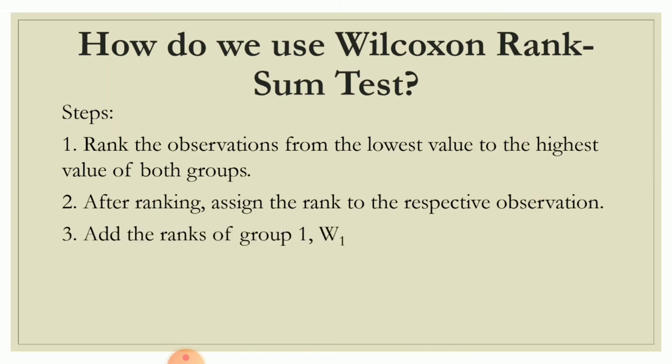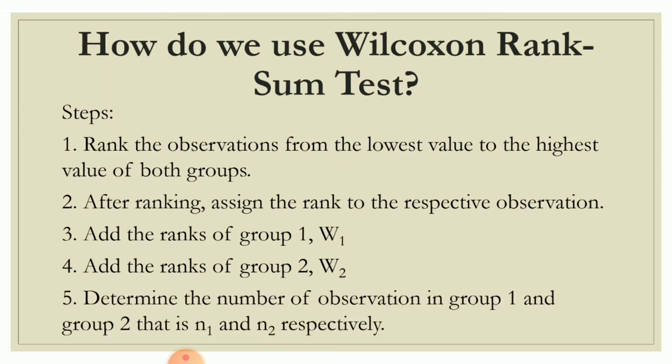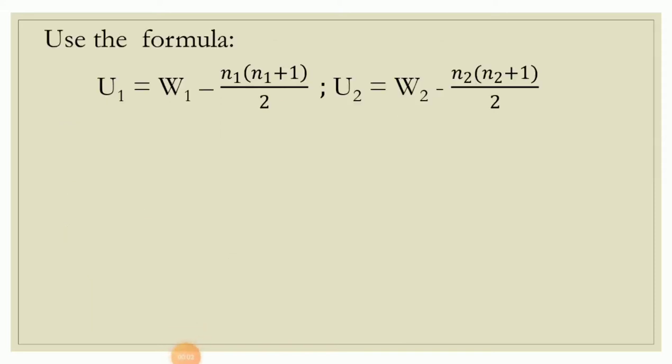Third, add the ranks of group 1, which is W sub 1. Then add the ranks of group 2, which is W sub 2. Fifth, determine the number of observations in group 1 and group 2, that is N sub 1 and N sub 2 respectively. Also use the formula for group 1: U sub 1 is equal to W sub 1 minus N sub 1 times the quantity N sub 1 plus 1, all over 2.